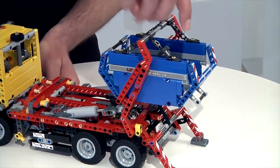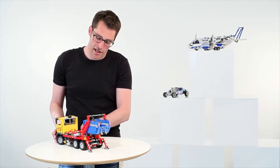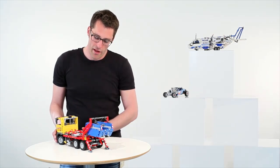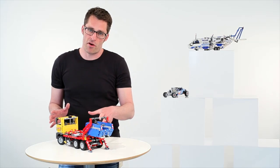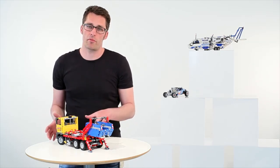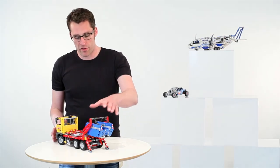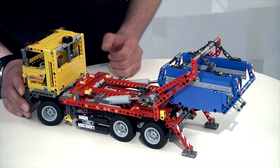And then you can detach the chains. And then you can leave the container behind and drive off. And this is actually a very authentic function. This is how it works in real life also. So very magic functionality. And the great thing about this model is also its power functions upgradeable. So if you buy the power functions box and you add it, then the functionalities I just showed you in the back with the container becomes electrified and motorized.